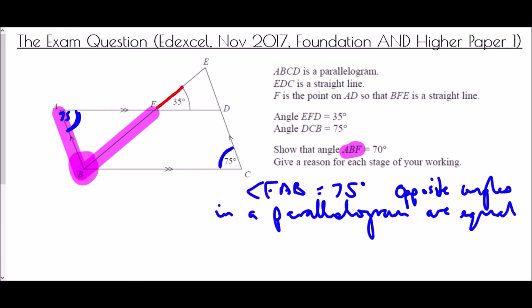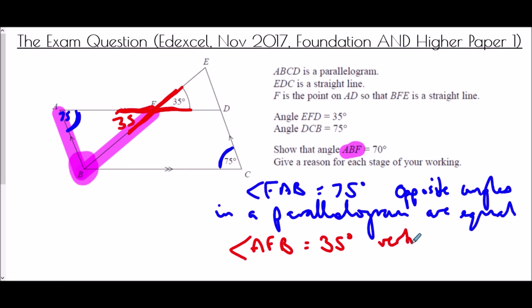The 35 degree angle at EFD has a vertically opposite angle at AFB, and vertically opposite angles are equal. So angle AFB equals 35 degrees. Reason: vertically opposite angles are equal.